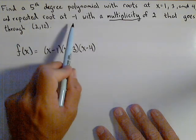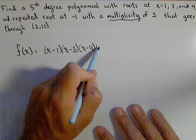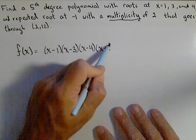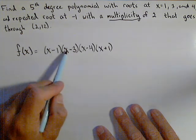Now we have a repeated root at negative one. So if negative one is a root, that means x minus negative one is a factor, or we could write that as x plus one is a factor. Now right now, if you look, we have degree one, two, three, four.